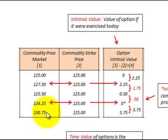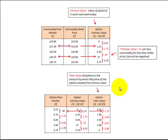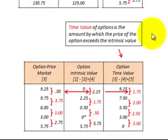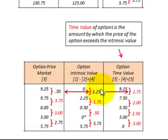In the last period, the market price is $130.75 versus the commodity strike price of $125.00, giving a difference of $5.75. The change between periods was from $0 to $5.75 — a change of $5.75. To determine the time value of the option, we take the change in market value for each period and subtract the change in intrinsic value for each period. In the first case, we had a $0.50 market value change minus a $2.25 intrinsic value change, giving a negative $1.75 time value change.